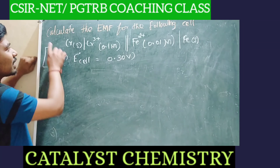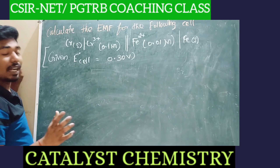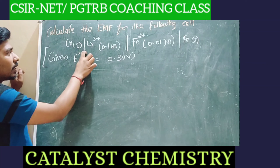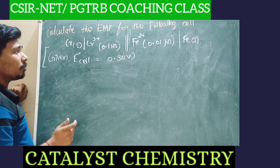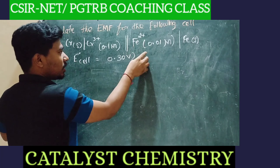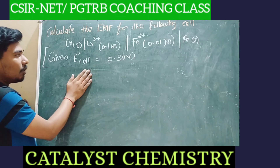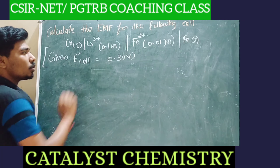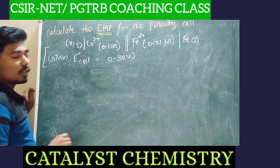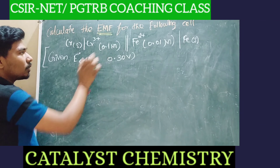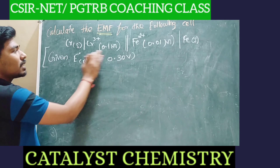Now, see the question: calculate the EMF for the following electrochemical concentration cell. We have: Cr slash Cr³⁺ (concentration 0.1 M) double slash Fe²⁺ (concentration 0.01 M) slash Fe. Given: E⁰cell = 0.30 V. Calculate the EMF of the cell.